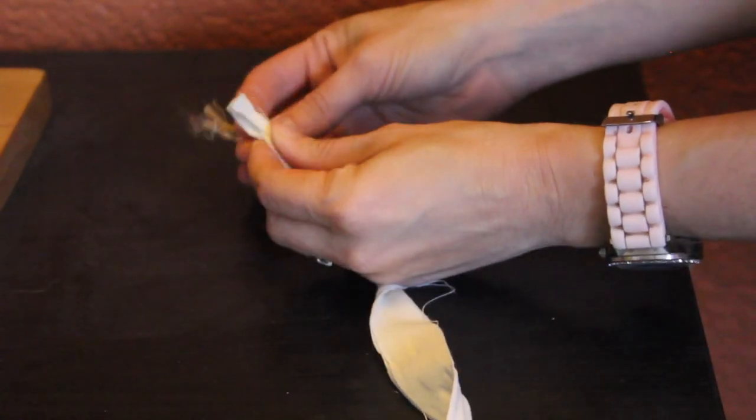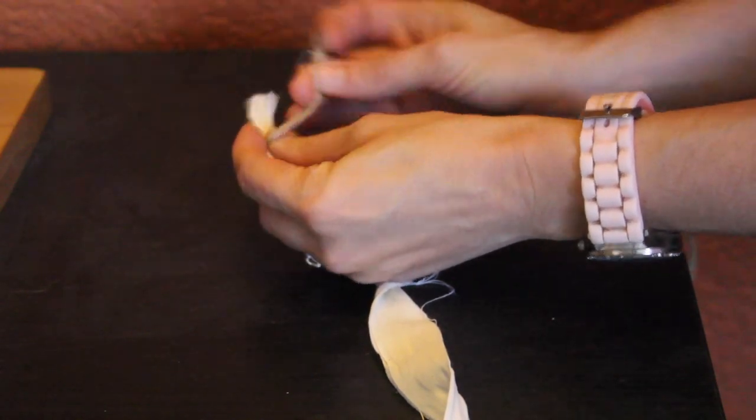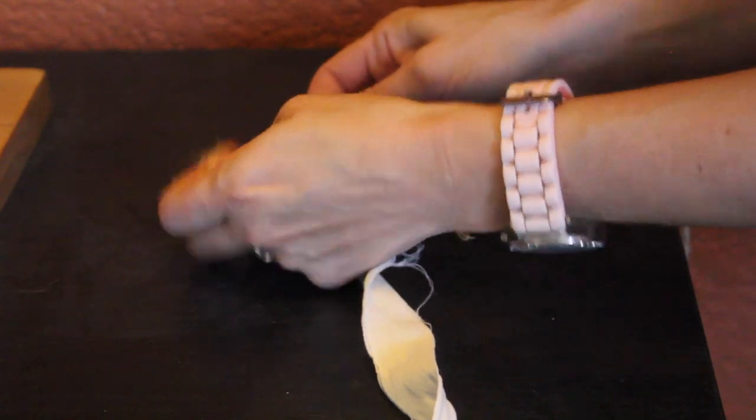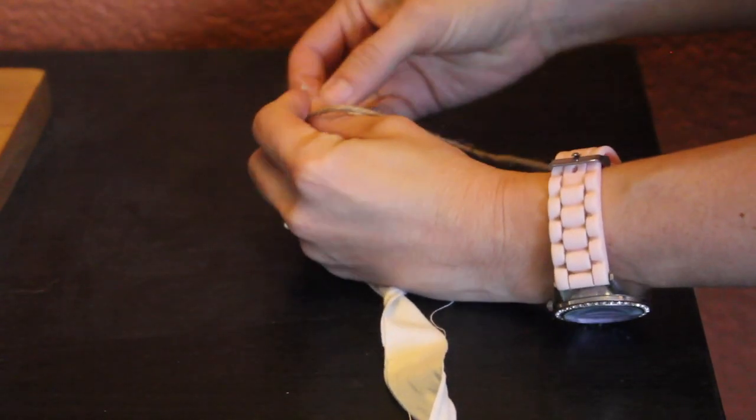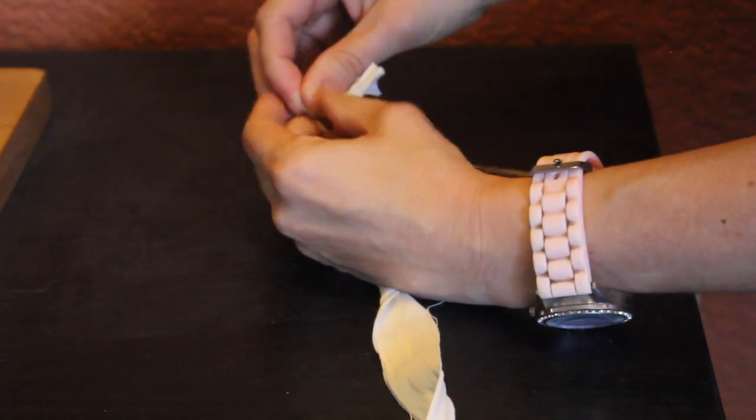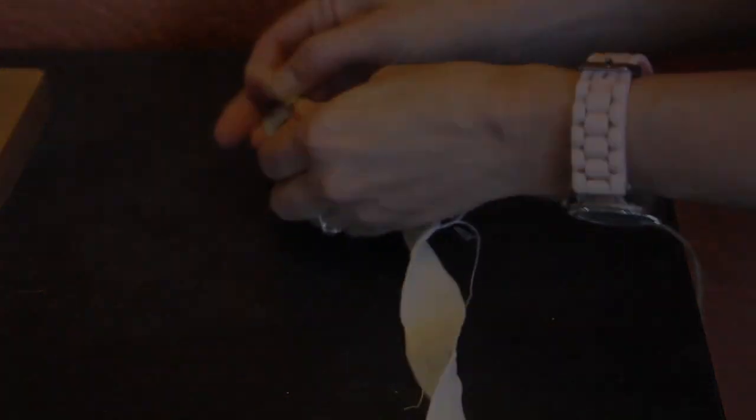The next step is I tie the other end of the cloth to the twine. Just do a simple knot with the twine. Once. Twice. Three times.